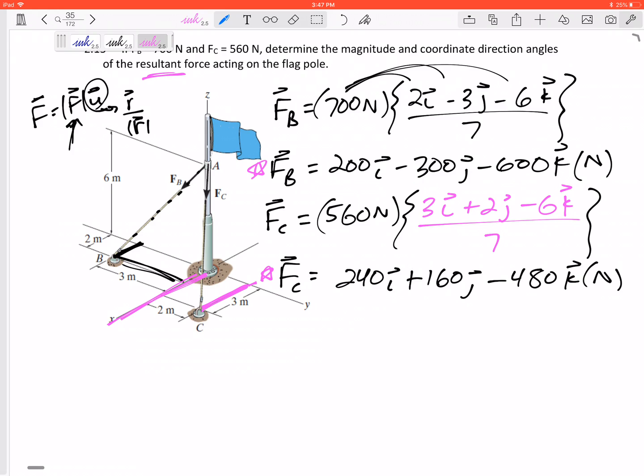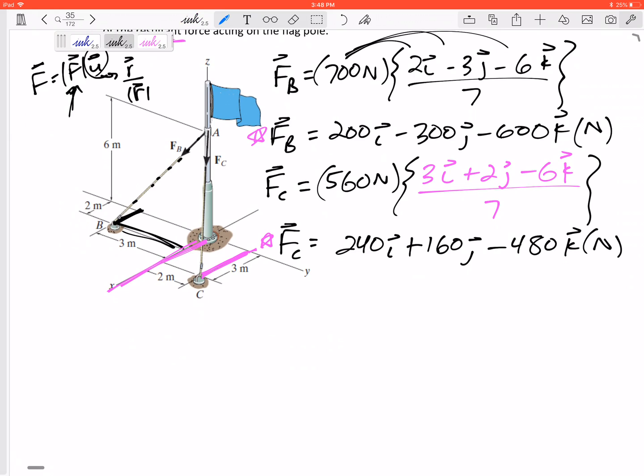So the resultant would be 440 in the I minus 140 in the J minus 1080 in the K, units are Newtons. That's the resultant, but it wants the magnitude of the resultant.